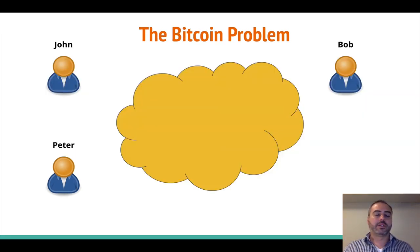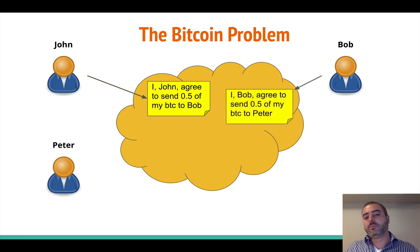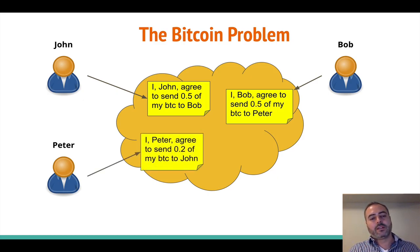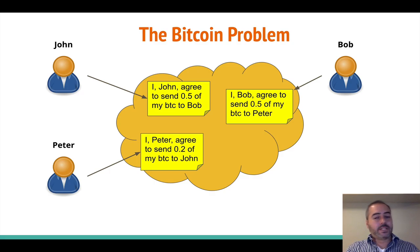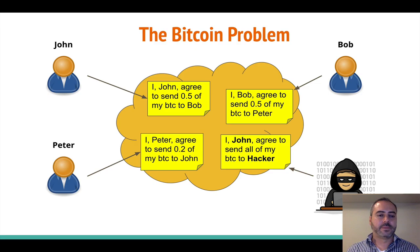In Bitcoin, we have a similar problem because different people are trying to start transactions — to send money to each other. For example, John posts a transaction to the network saying: I, John, agreed to send 0.5 Bitcoin to Bob. Bob does something similar to send money to Peter, and Peter does the same. But this on itself is obviously not enough because nothing is stopping anyone from trying to impersonate someone else and say: I, John, agreed to send all my Bitcoin to a hacker. This is why digital signatures came to be, and they're widely used in many blockchains — not only Bitcoin but also Ethereum.